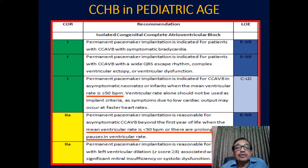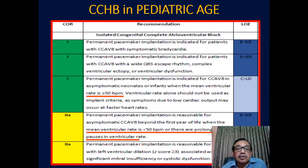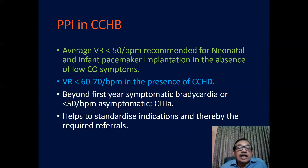Congenital complete heart block in the pediatric age group: permanent pacemaker implantation is indicated for patients with congenital complete AV block with symptomatic bradycardia. It is a Class 1 indication for asymptomatic neonates or infants when the mean ventricular rate is less than 50 beats per minute. It is a Class 2a indication for asymptomatic complete heart block beyond the first year of life when the mean ventricular rate is less than 50 beats per minute or there are long pauses. The threshold is 60 to 70 beats per minute in the presence of congenital heart disease.